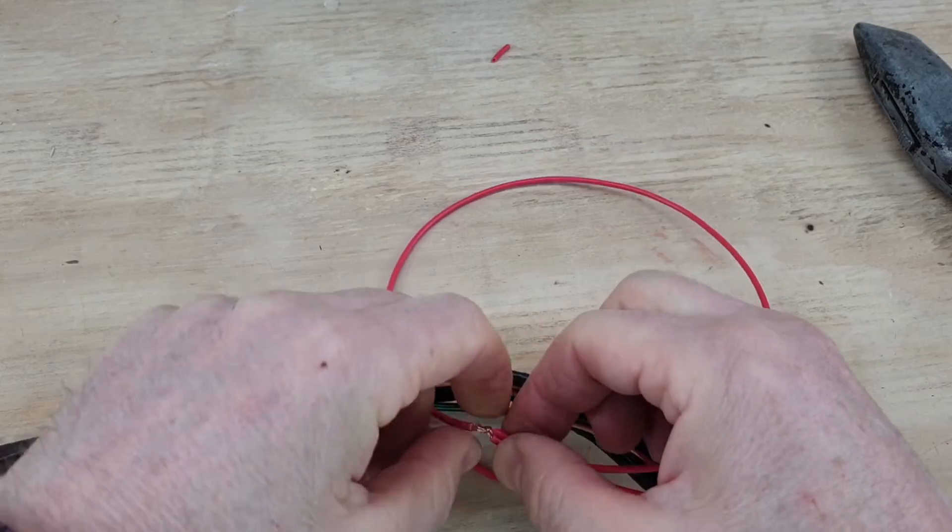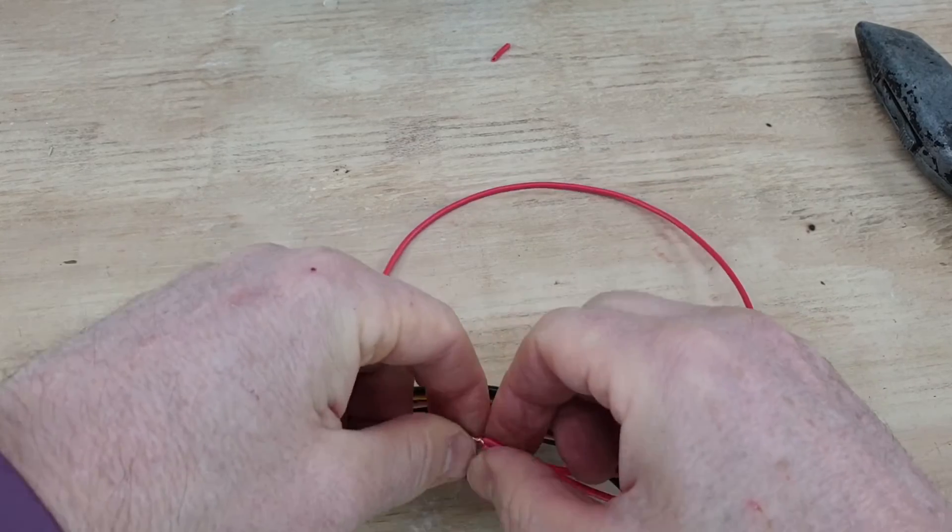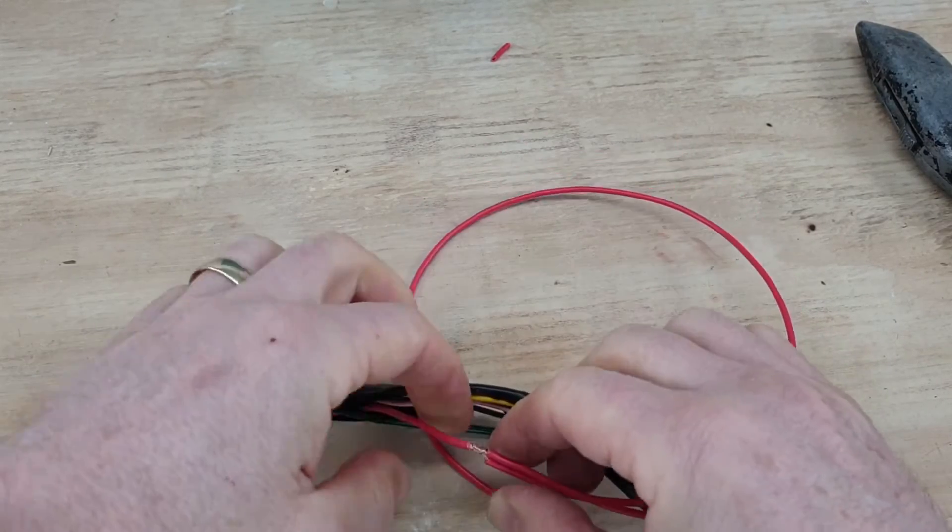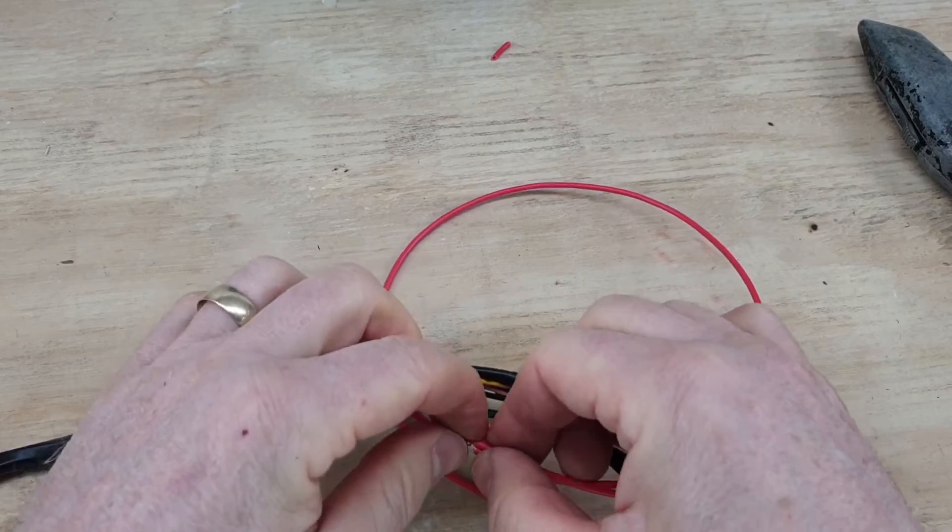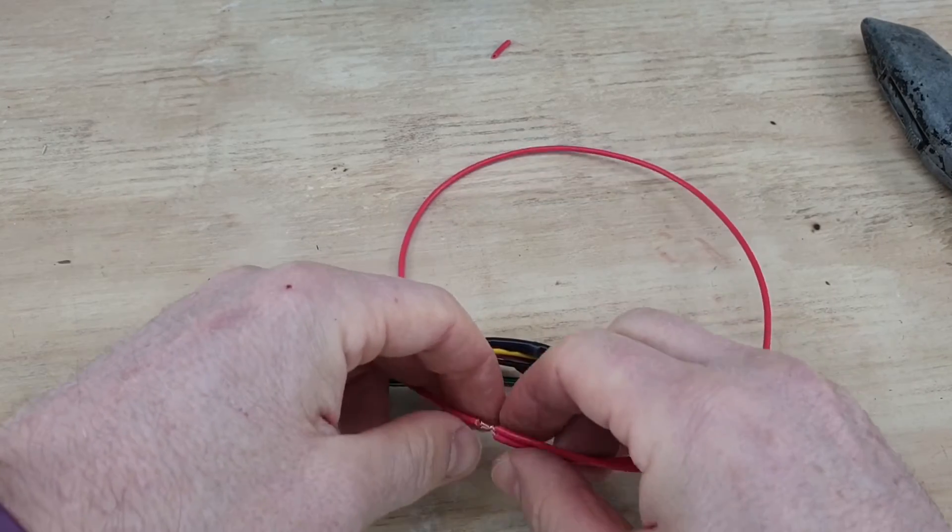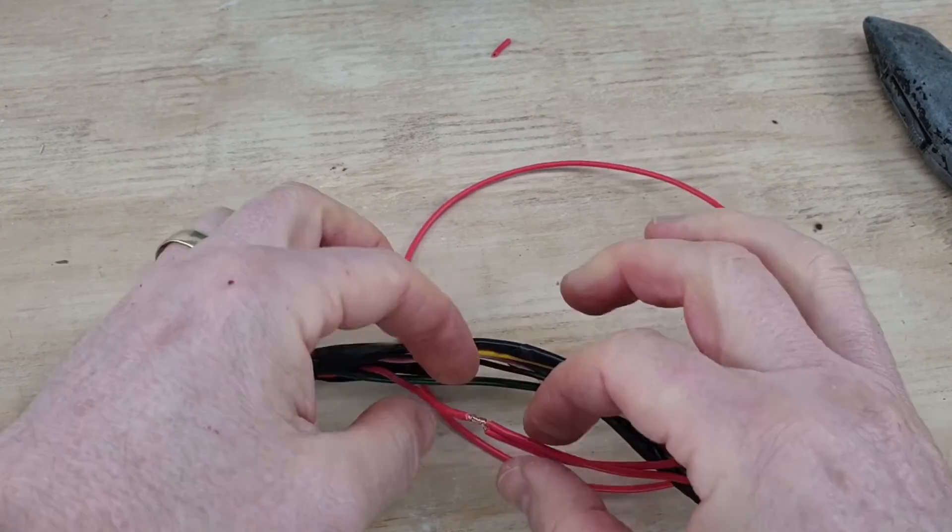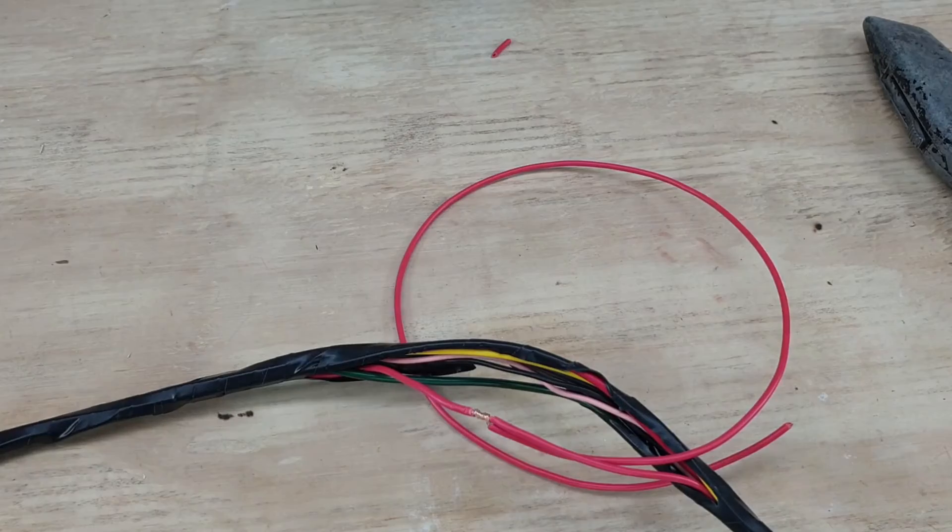And make sure we've got no straggly ends. Now we're not going to be able to use heat shrink, obviously, because this cable's joined at both ends, so we can't slip it on. So it'll be insulating tape. There we go. That's joined, ready for soldering.